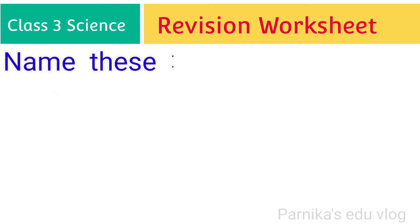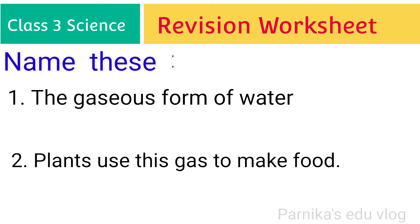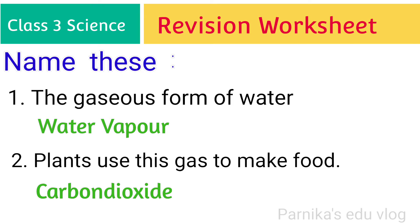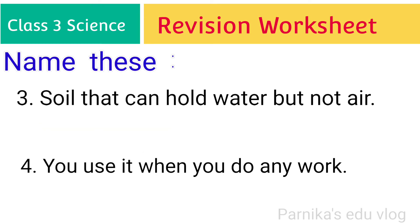My dear friends, name this. First one: the gaseous form of water. We call it water vapor. Second one: plants use this gas to make food. Do you know? It is carbon dioxide, right? Third one: soil that can hold water but not air. Do you know what type of soil it is? Yes, it is clay.